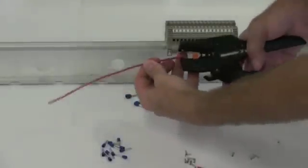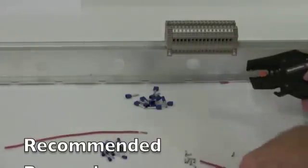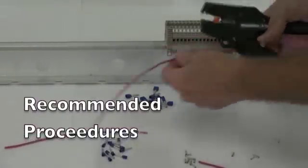All of these ferrules are compressed onto the end of the stripped wire using a ferrule crimping tool. The usual process is as follows.